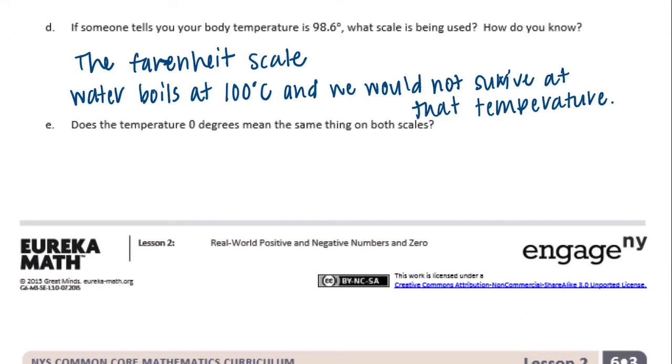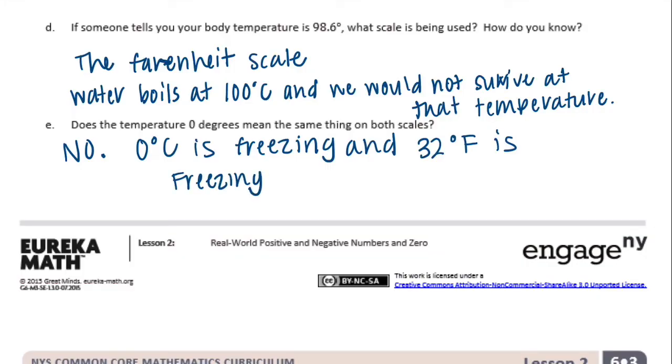And Part E: does the temperature zero degrees mean the same thing on both scales? So, no. Kind of like how 100 degrees Fahrenheit doesn't mean the same thing when we're talking 100 degrees Celsius. They're different scales. So, no. No. We already know. We just talked about zero degrees Celsius is freezing, and 32 degrees Fahrenheit is freezing. So, they are not the same.